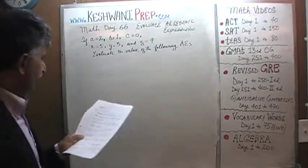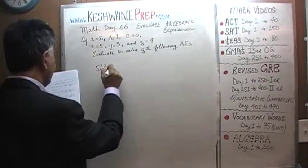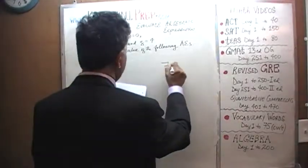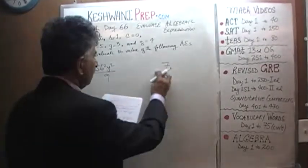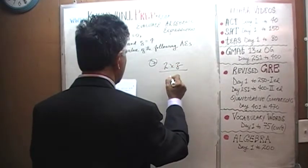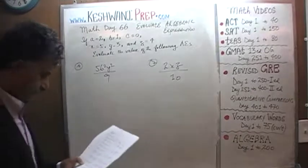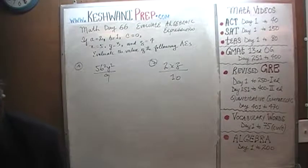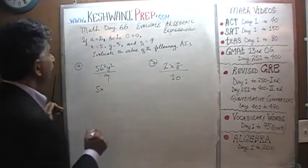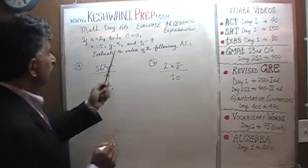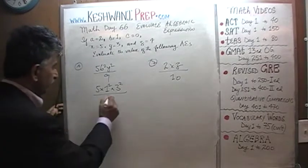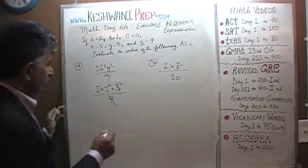That was number 5. Here is number 6: 5b squared y squared over 9. 5 times b squared which is 1 squared, times y which is 3 squared, over 9. That 9 cancels out with 3 squared, and 1 squared is just 1, so it's just 5.